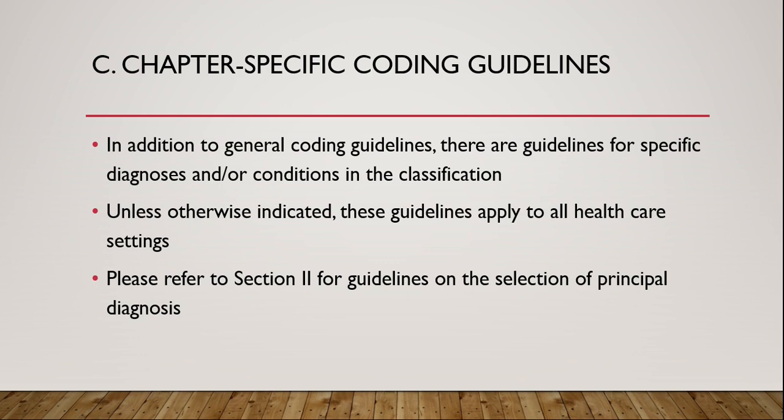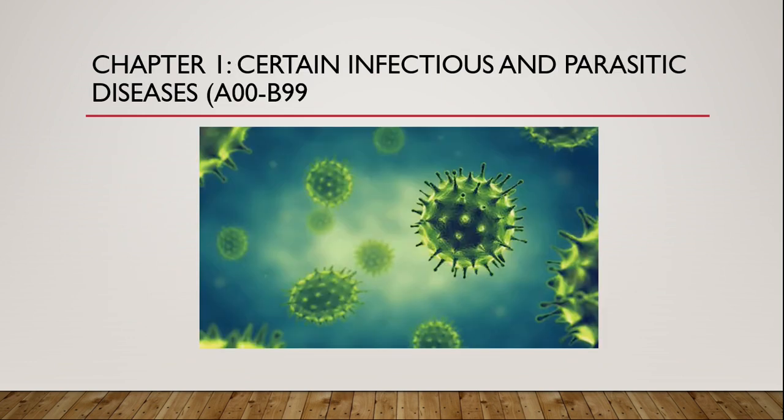Please refer to Section 2 for guidelines on the selection of principal diagnosis, which is applicable to your inpatient setting. We will not discuss Section 2 for the meantime because we are talking about the CPC. Let's start with Chapter One: Certain Infectious and Parasitic Diseases, which covers codes A00 to B99.